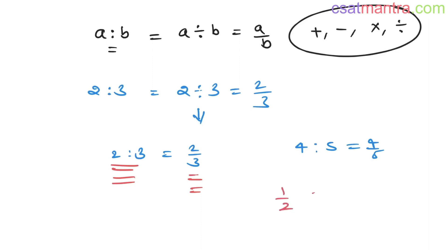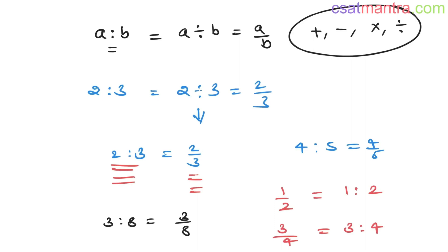If you have one by two, you can write it as one is to two. If you have three by four, you can write it as three is to four. If you have three is to eight, you can write it as three by eight.